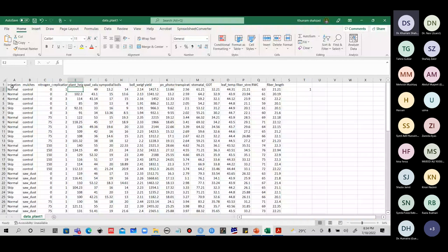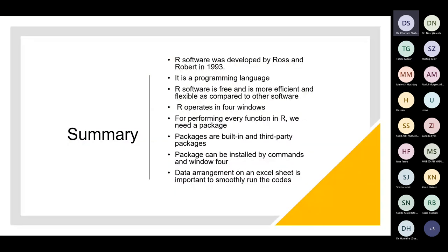We will summarize the presentation and then move to R software. R software was developed by Ross and Robert in 1993. It's a programming language. R is free and more effective compared to other softwares. R operates in four windows. For performing every function in R, we need a package — either built-in packages already installed in R, or third-party packages you install yourself. Data arrangement on Excel is very, very important to smoothly run the course. If data is not properly arranged, you will not be able to perform your coding easily.